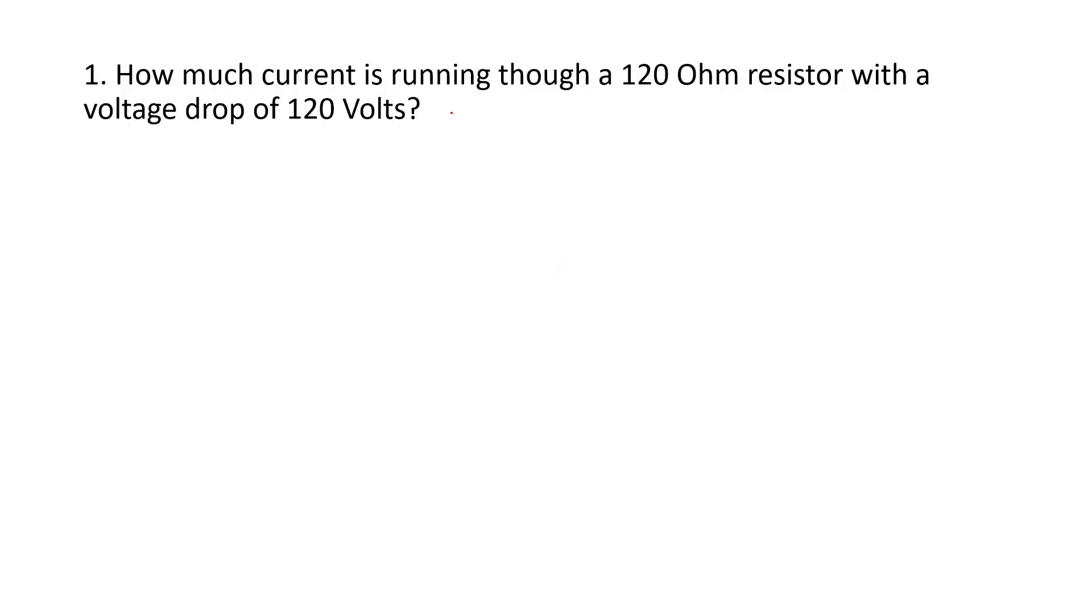So this next problem set, we have a current running through a 120-ohm resistor with a voltage drop of 120 volts. So what is the current? We have our resistance of 120 ohms, and we have a voltage of 120 volts. That leads you to V equals IR, which rearranges to I equals V over R, and we get one amp for our answer.